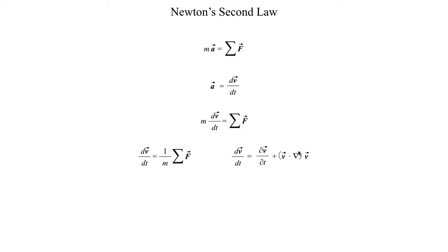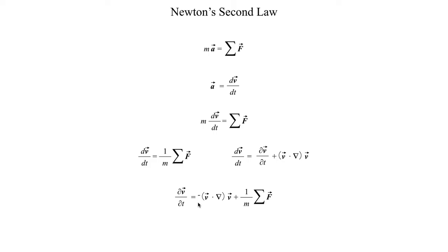This might seem complicated at first, but there is algebra you can do to simplify it. When we look at it in component form a little bit later, it will hopefully make more sense both mathematically and physically. If we take this expression and substitute it in, after some algebra we get a result that resembles what we had in the previous segment: the partial derivative with respect to t equals all the forces, with the advection term included. So dv/dt equals negative advection term plus the sum of all the forces.